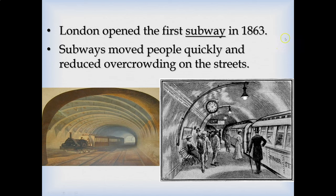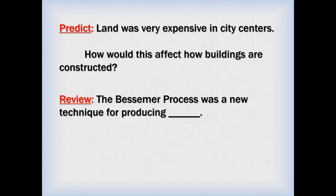Subways allow people to travel back and forth across town without having to be in the streets, reducing traffic and crowding. Subways popped up all across the world — New York has a very famous subway today. Now, with very expensive land in the city center, you can't afford to own a lot of land, so this changed how people built buildings. Instead of building out, they're going to build up.